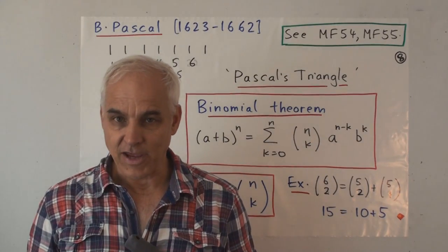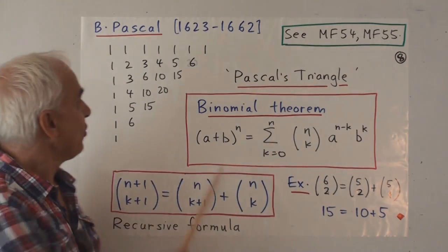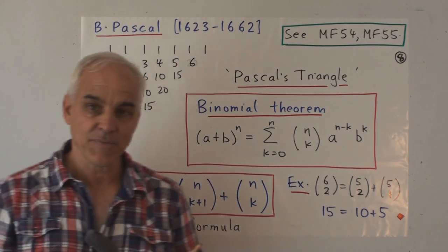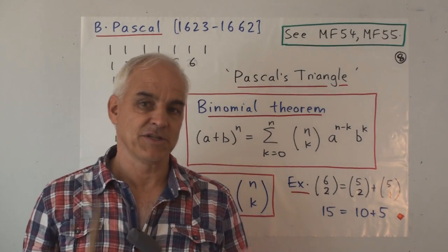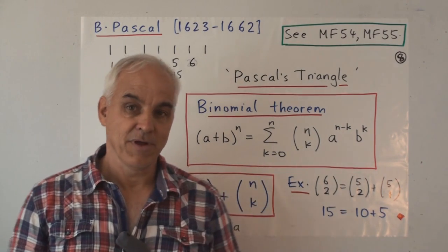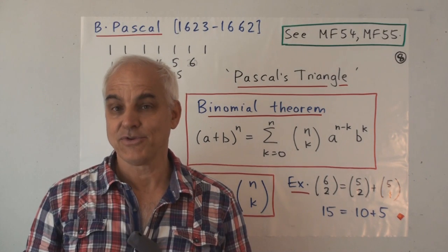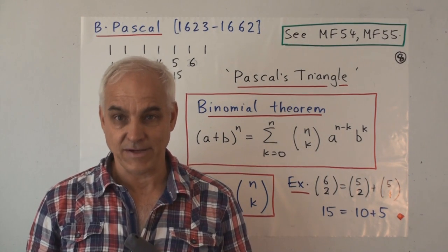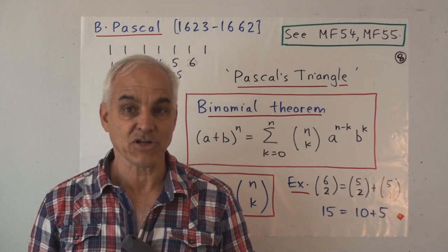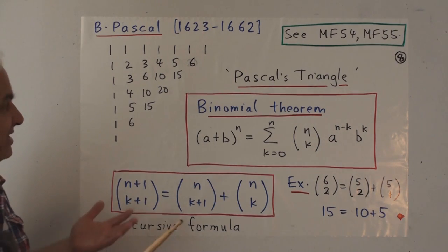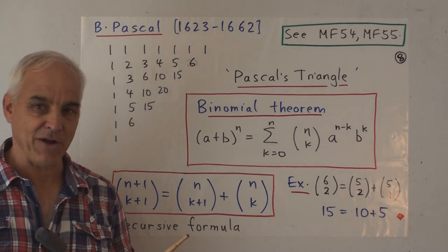Blaise Pascal was a French prodigy who lived 1623 to 1662. Died rather young. But made important contributions to mathematics, to probability, to the binomial theorem, to projective geometry. And was also well known for his literary and philosophical writings. He accomplished very much in a short time.